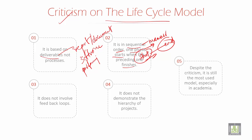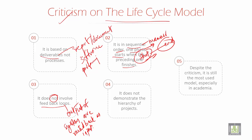The third criticism is that it does not involve feedback loops. Feedback loops are where the output of the system is routed back as inputs, as part of a chain — like cause and effect — that forms a loop.